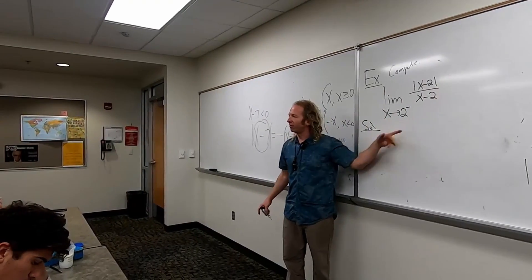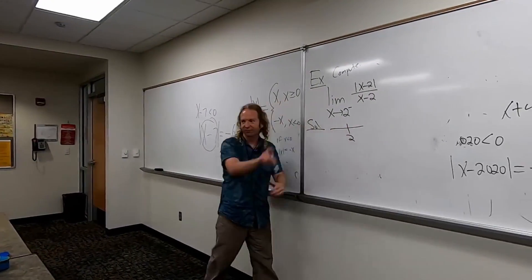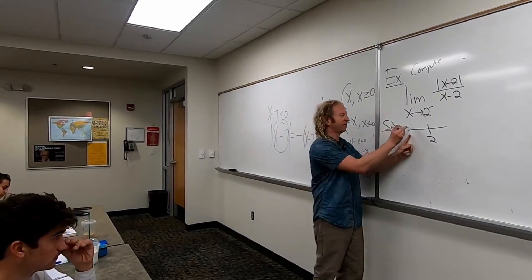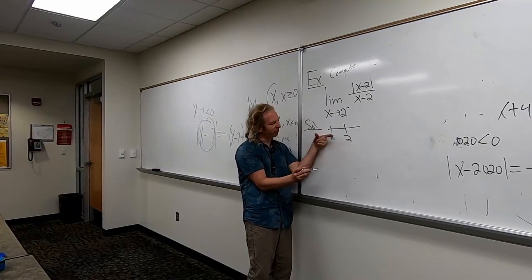So we're approaching 2 from the left. So I like to draw a picture, because I love pictures. So this is 2. And we're coming from the left. So here's x, and it's traveling this way, right? It's going to 2 from the left.